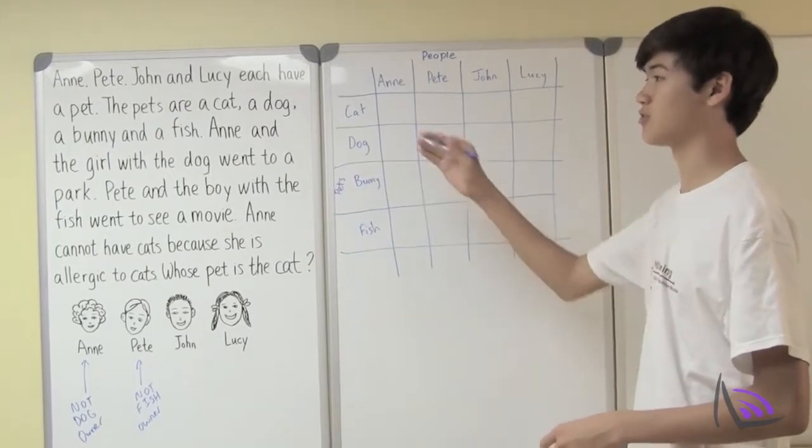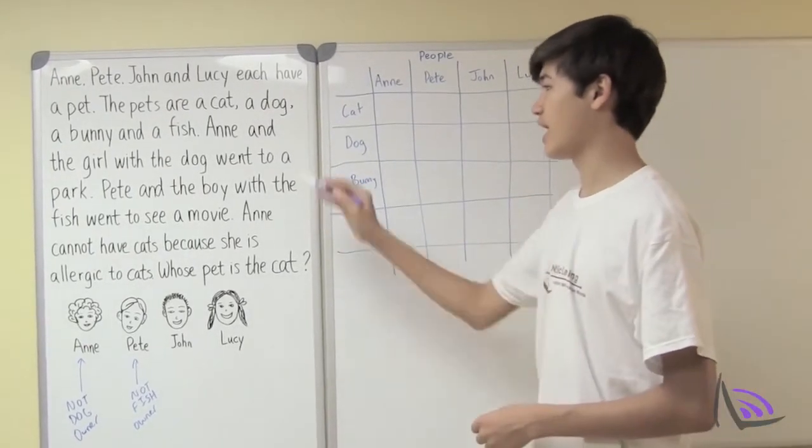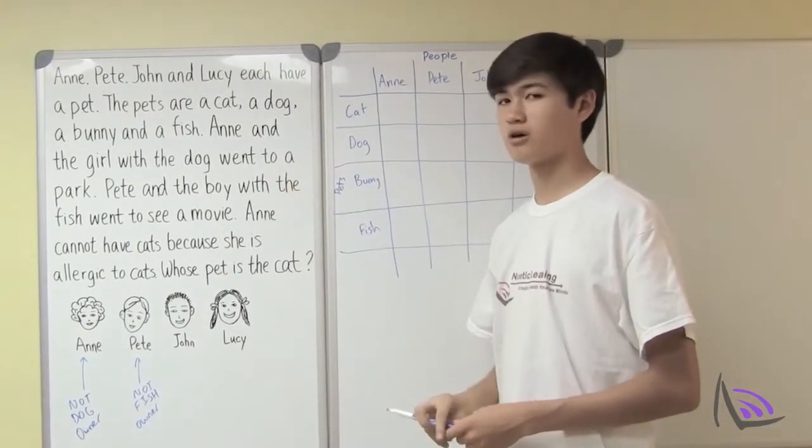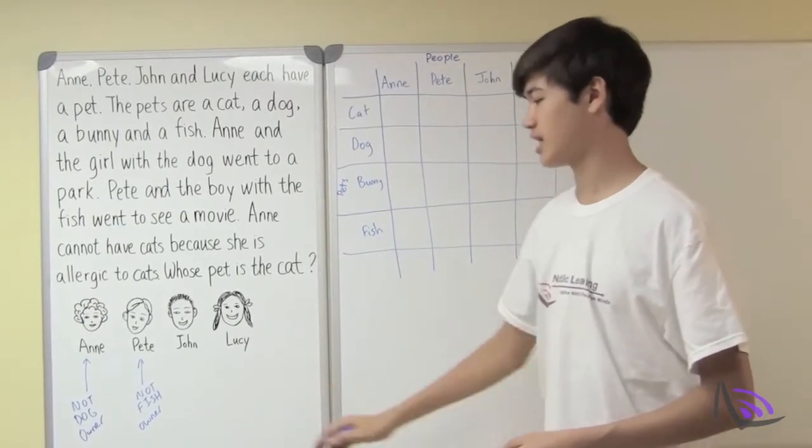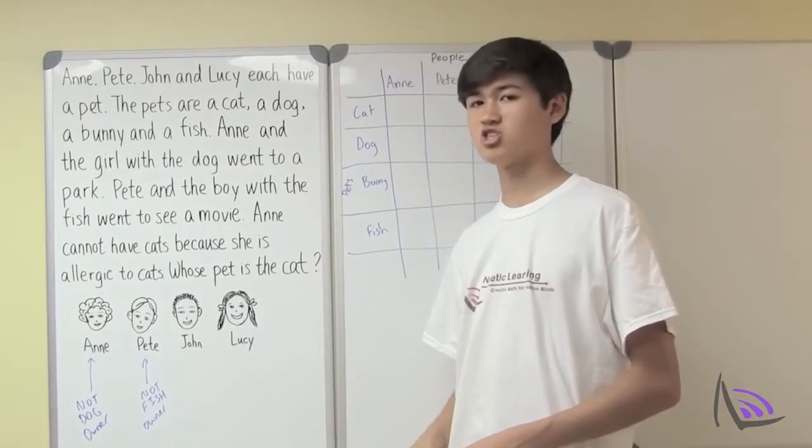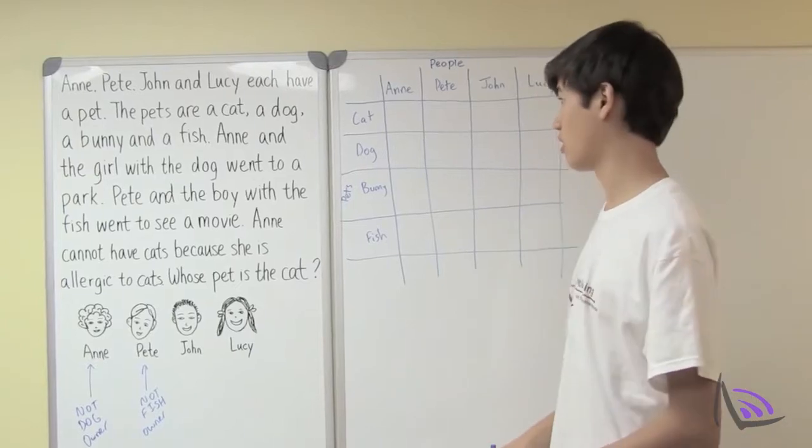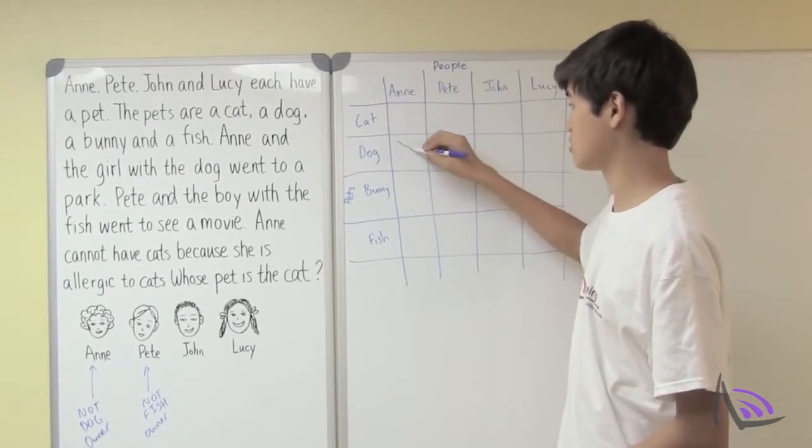So now let's start with the first given information. Ann and the girl with the dog went to a park. So what we concluded earlier is that Ann must not be the dog owner since she went with the dog owner to the park. So for Ann and dog, we put an X.